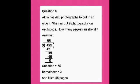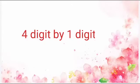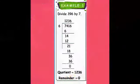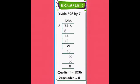Now we will see division of 4-digit by 1-digit number. Example 1: 7416 ÷ 6. In 7, how many 6s? One — 1 × 6 = 6. Subtract: 7 − 6 = 1. Take down the 4 — in 14, how many 6s? Two — 2 × 6 = 12. So 14 − 12 = 2. Take down the 1.